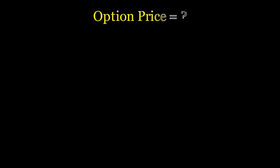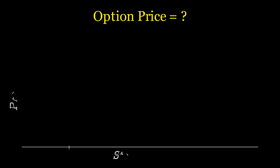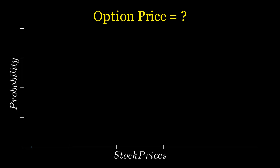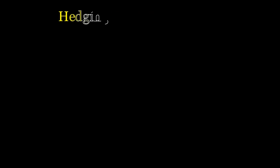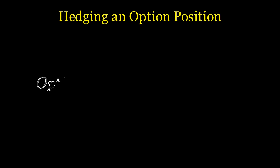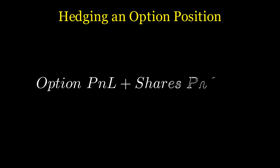Black and Scholes came up with their model to answer a big question: if stock prices move randomly in a log-normal way, but consistent with constant interest rates and volatility, what should an option's price be at any moment in time for a perfectly hedged position to just break even? A hedged position means holding a specific amount of shares at any given moment in time to ensure the overall position neither makes nor loses money.